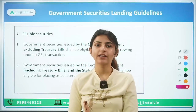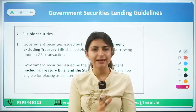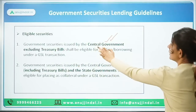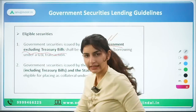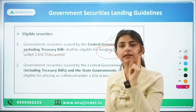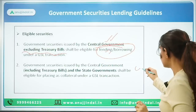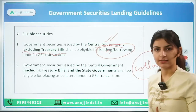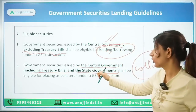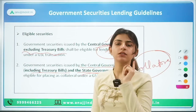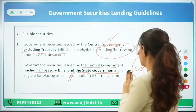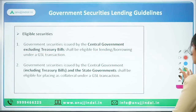Now, what are the eligible securities? Securities eligible for borrowing and lending are those issued by the central government, excluding T-bills. For collateral, the eligible securities include those issued by the central government — including T-bills — as well as state government securities. So T-bills can be placed as collateral under a GSL transaction.